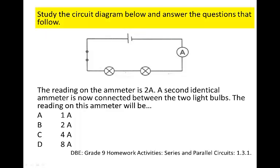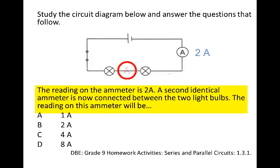Study the circuit diagram below and answer the questions that follow. The reading on the ammeter is 2 amps. A second identical ammeter is now connected between the two light bulbs. The reading on this ammeter will be what?